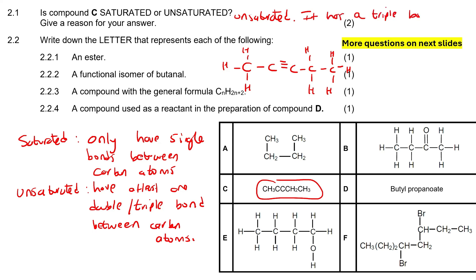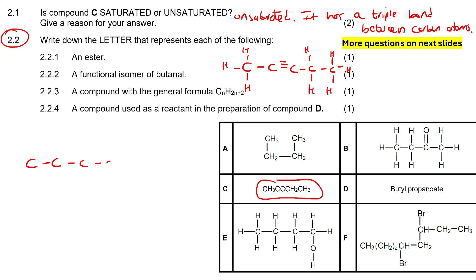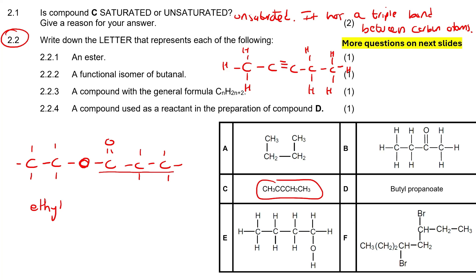Write the letter that represents an ester. An ester has an oxygen somewhere in between two carbons. The name of an ester has an alcohol part and a carboxylic acid part — remember an ester is formed from a carboxylic acid and an alcohol. Esters end in the suffix '-ate', so looking at the molecules on the table, we can see that compound D has that feature, so the answer is D.